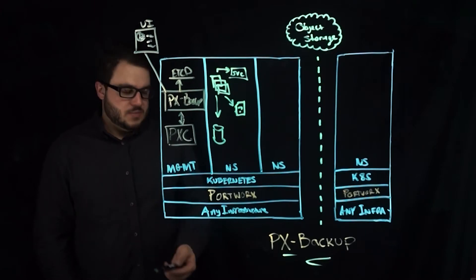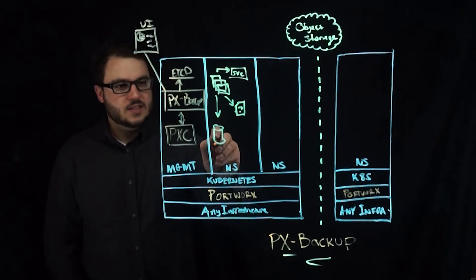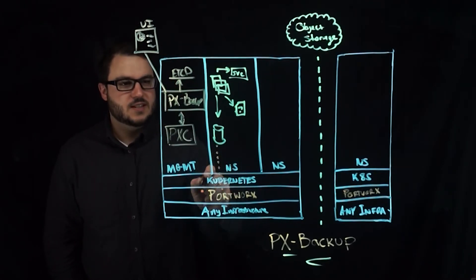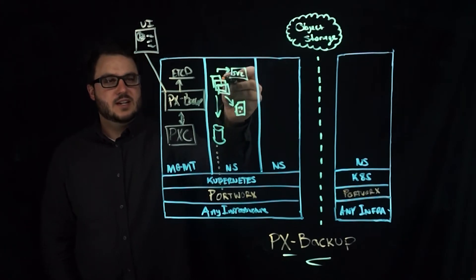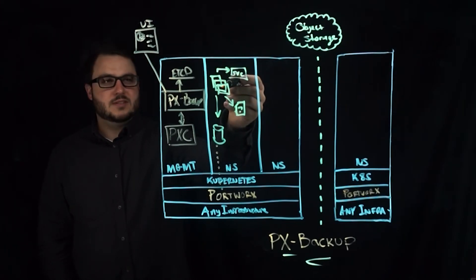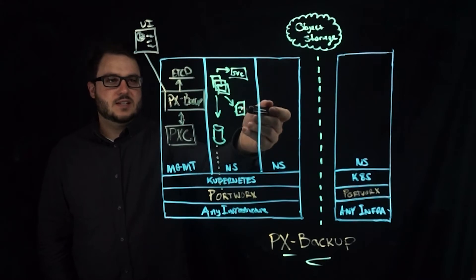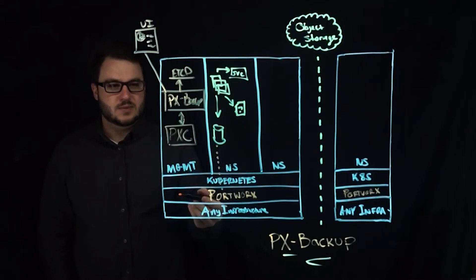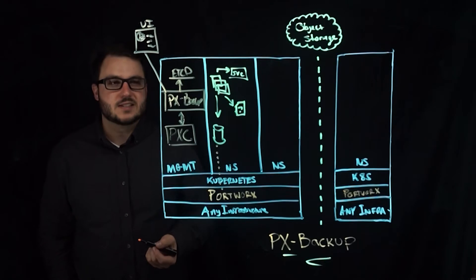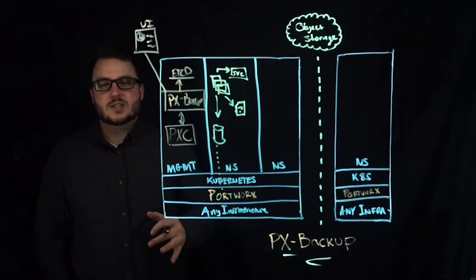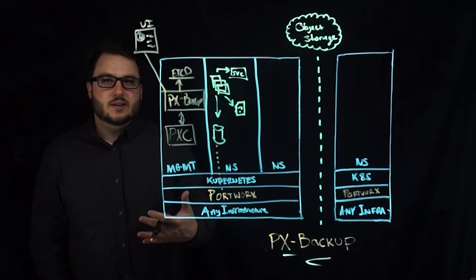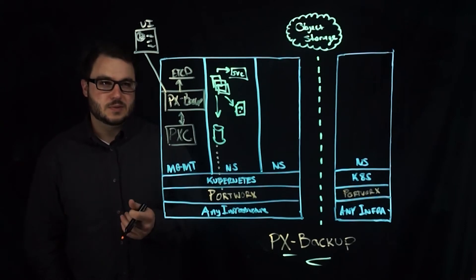We have to remember that each one of these types of things, multiple pods is a deployment or a stateful set, a service, a secret, a PVC, which connects to a PV that something like Portworx provides, is all part of the application, even though they are part of different objects within Kubernetes.